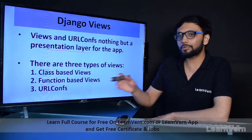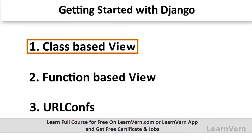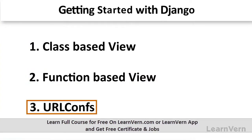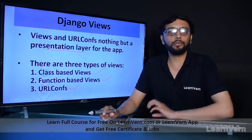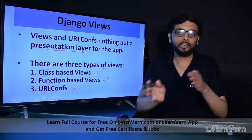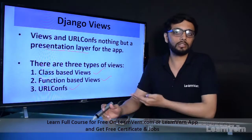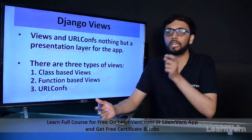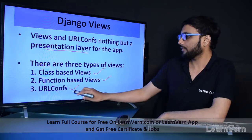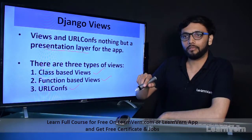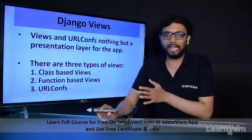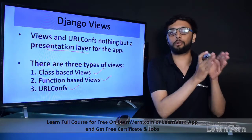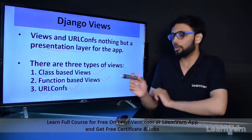There are three types of views. First is class-based views. Second is function-based views. And third is URL confs. When we create a class and define it in views, it's called a class-based view. When we define a function, it's called a function-based view. When we create an app, define a view in our app, and call it from the project, that is called a URL conf.